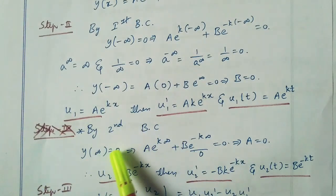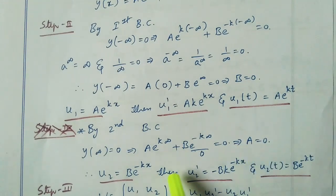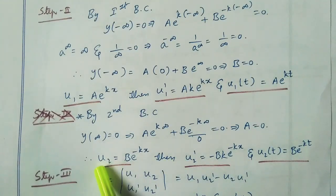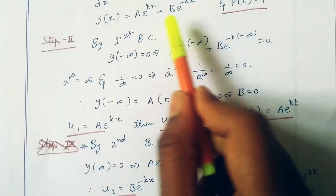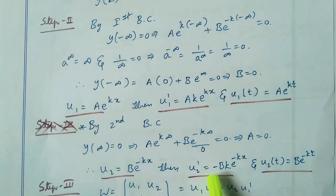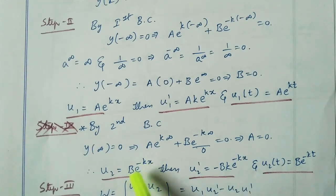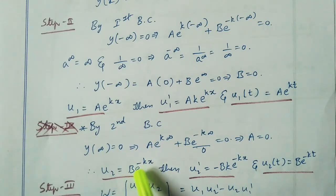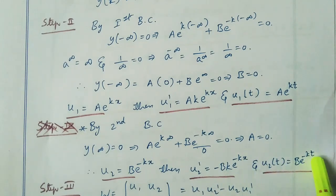By applying the second boundary condition y(infinity) equal to 0, we get a equal to 0. Therefore, by substituting a equal to 0, u2 equal to b·e^(-kx), then u2 dash equal to minus bk·e^(-kx), and u2(t) equal to b·e^(-kt).